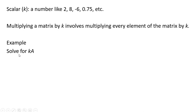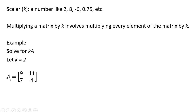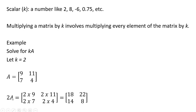So an example. We're going to solve for the following — we're going to take matrix A and multiply it by some scalar. In this case we're going to let that scalar equal 2. Here's our matrix A, and now we're going to multiply every element of this matrix by 2, so we can write it 2 times matrix A.